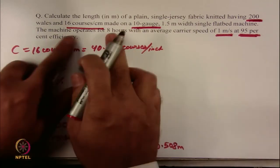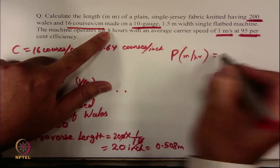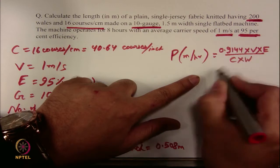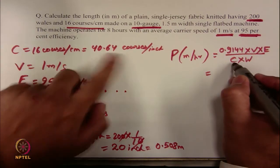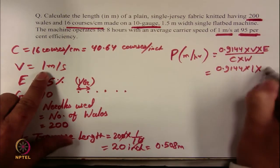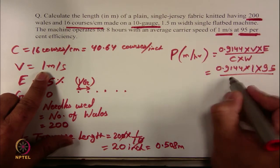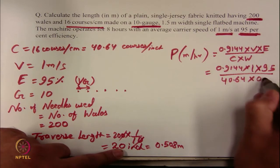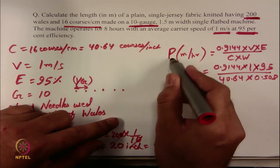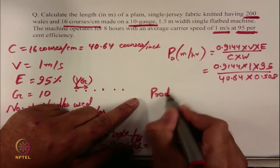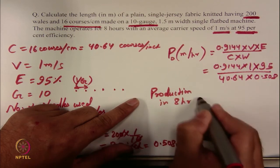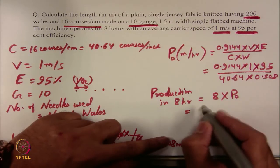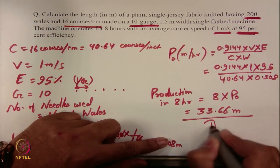Now apply the formula. Production per hour = 0.9144 × V × E / (C × W). Substituting: 0.9144 × 1 × 95 / (40.64 × 0.508). Note that C must be in courses per inch. This gives the production per hour P₀. For 8 hours, multiply: Production = 8 × P₀. The final answer is 33.66 meters. So with machine variables and basic fabric parameters, you can find the production capacity of the machine.